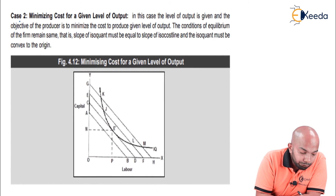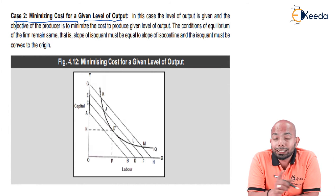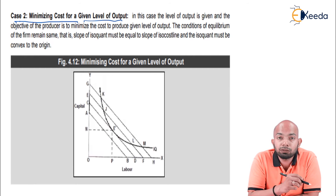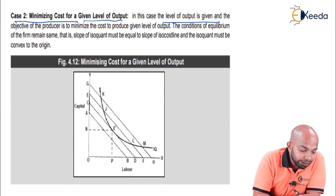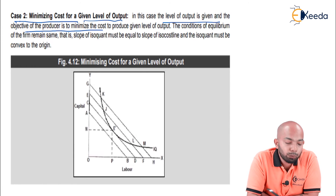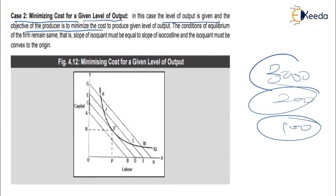Case 2 refers to minimizing cost for a given level of output. In this case, the level of output is already given — it could be 100, 200, or 3000 — and the objective of the producer is to minimize the cost. The producer must choose the best option to reach the required output level at minimum costing.